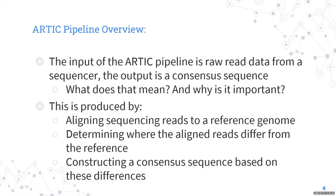We take sequencing reads and align them to the reference genome — in the case of SARS-CoV-2 that's the Wuhan reference genome. Aligning means you take each read and figure out where in the reference genome it fits best. Once all reads are aligned, you determine where they differ from the reference, which is called variant calling. That's how you spot mutations: substitutions, insertions, deletions, and things like that. From those differences you construct a consensus sequence based on those variants and the original reference.